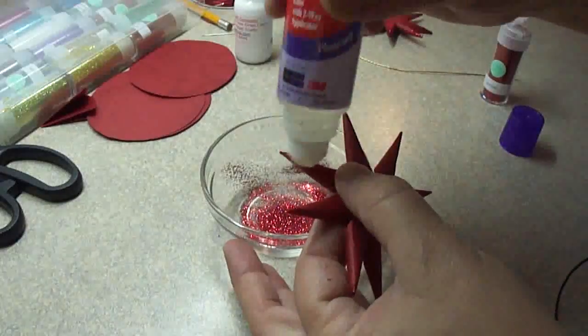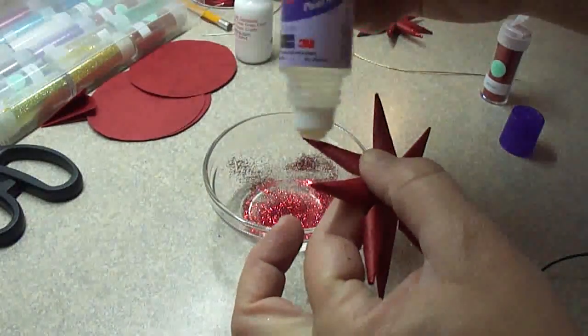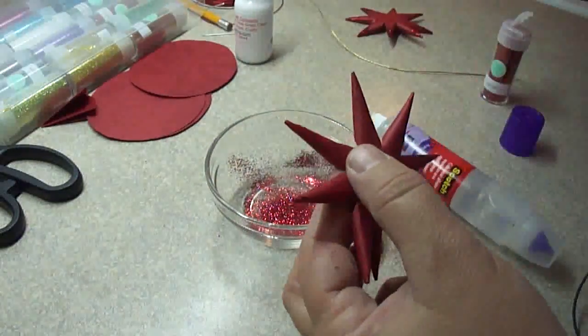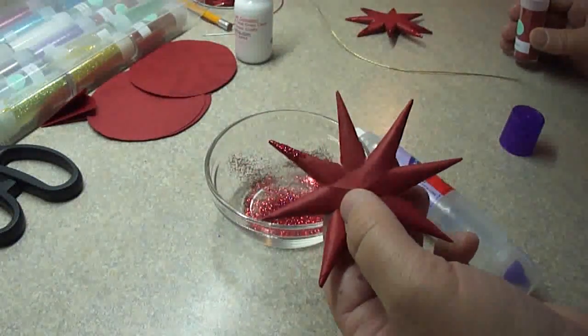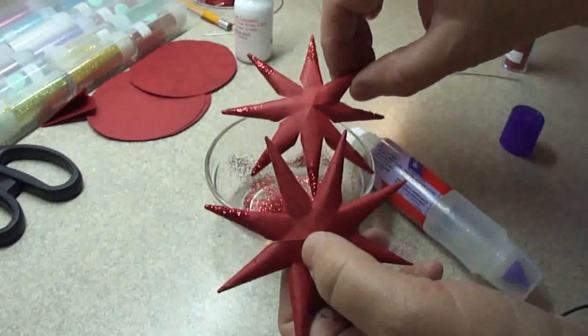Now you can also put some glitter on these. It makes them look a little bit shinier. You just apply a little bit of plain craft glue and then just sprinkle some glitter on the edges.